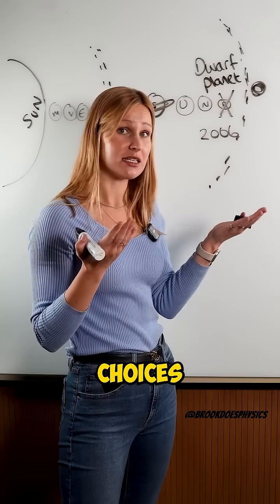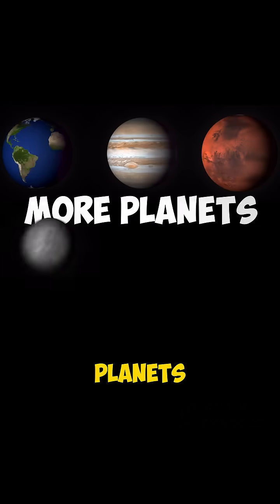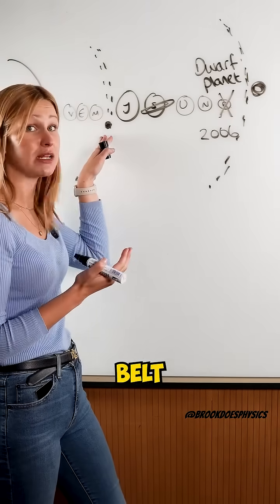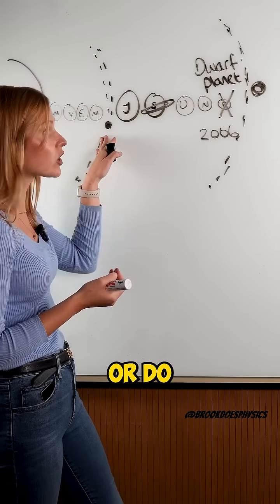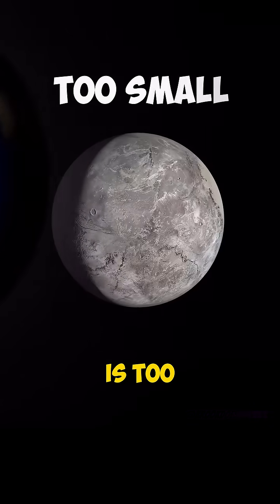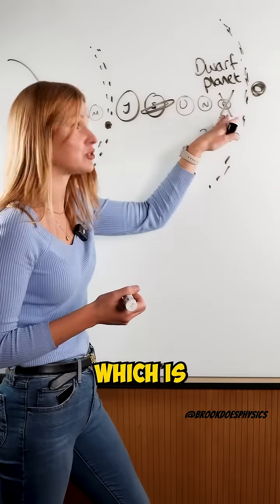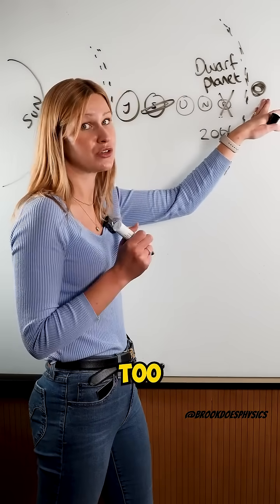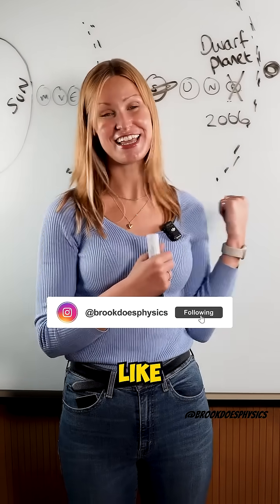NASA had two choices. They said, do we make more planets and say that these in the Kuiper belt and the asteroid belt are also planets, or do we say that Pluto is now too small to be called a planet? Which is why it's a dwarf planet, and we call these dwarf planets. Follow me for more content like this.